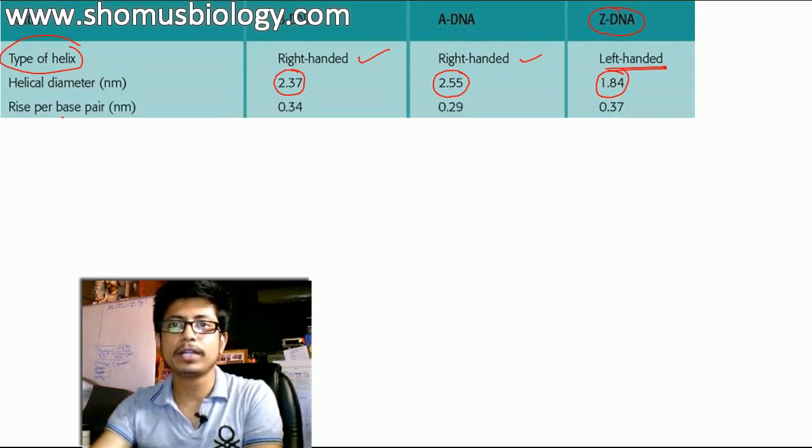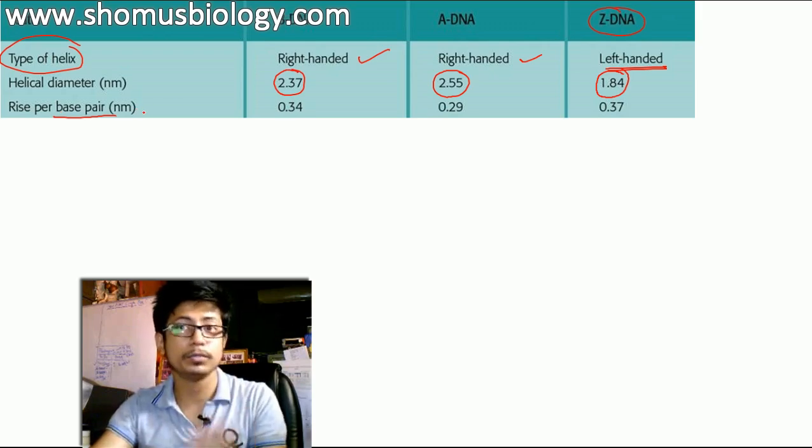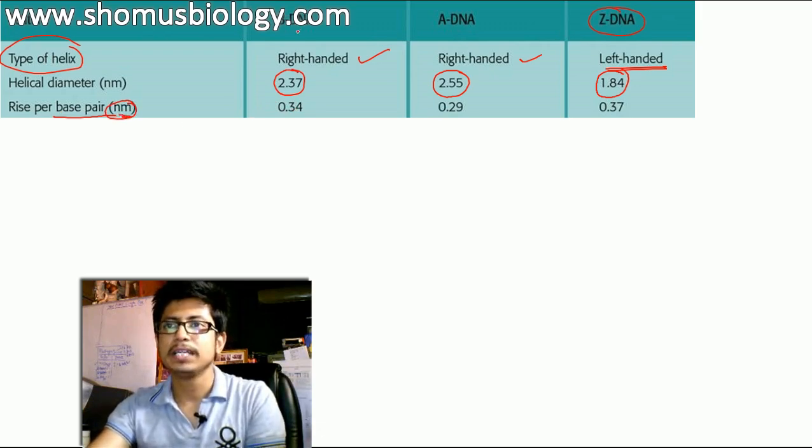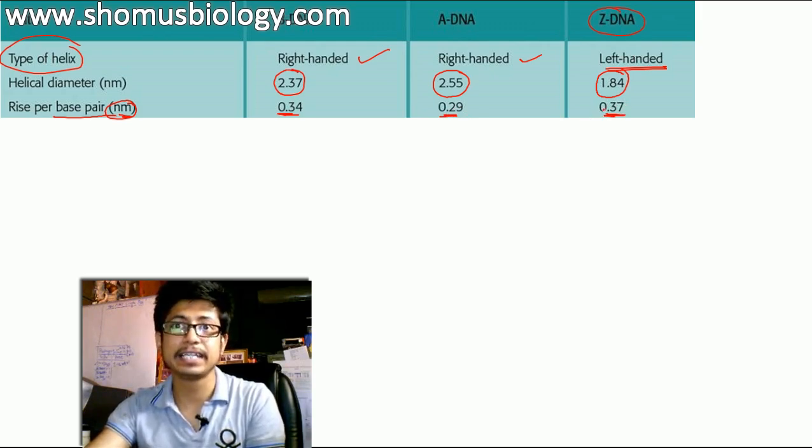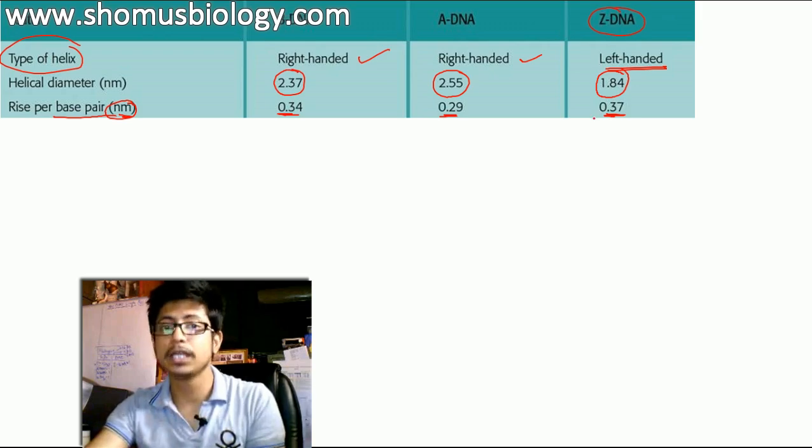If you look at here for rise per base pair, the rise means the distance between two bases, adjacent bases, remember, is in nanometer unit. For B DNA it is 0.34 nanometer, for A DNA it is 0.29 nanometer and for Z DNA it is 0.37 nanometer. That means Z DNA contains more bases per turn.